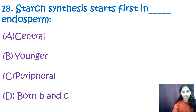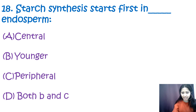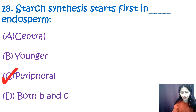Question 18: Starch synthesis starts first in which part of the endosperm — central, younger, peripheral, or both B and C? The correct option is C — peripheral. Starch synthesis first starts in the peripheral region of the endosperm.